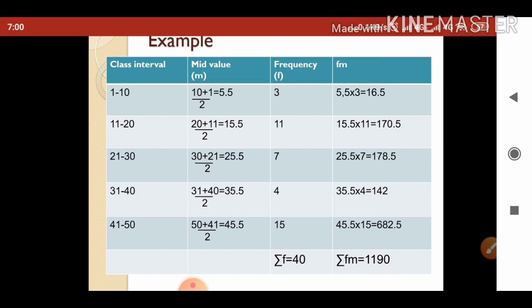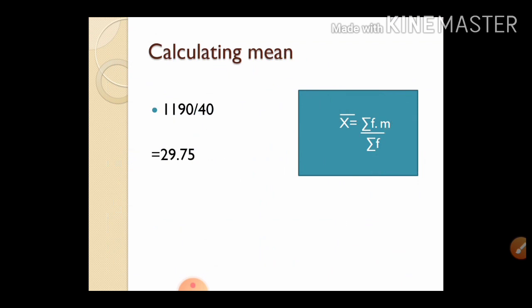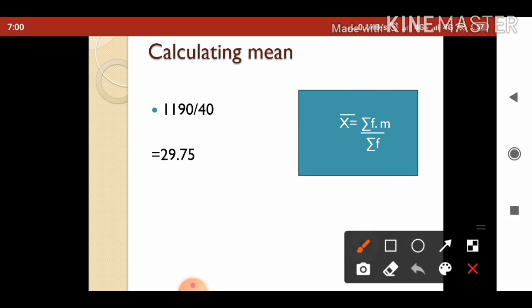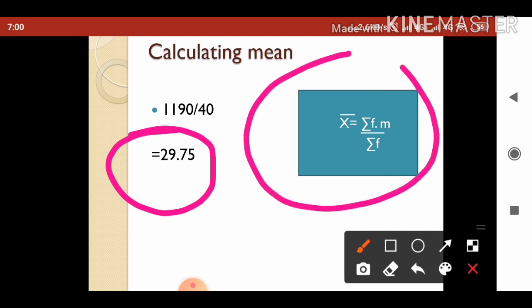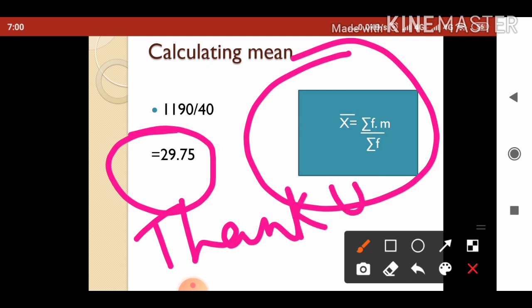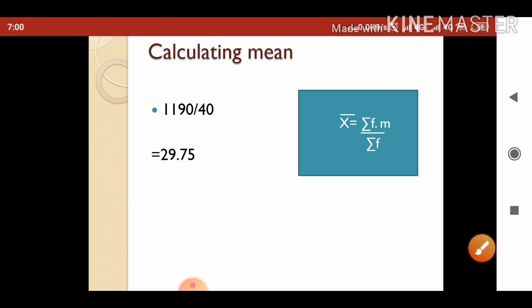The mean is sigma(fm) / sigma(f), so 1190 divided by 40 gives the mean as 29.75. By substituting those values in the formula, we got the mean as 29.75. Thank you — please subscribe to the channel for other calculations.